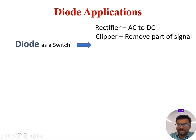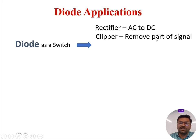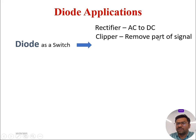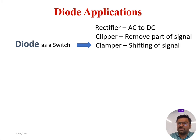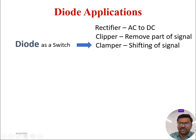Other than that, clipping action. Clippers are the circuitry which removes the unwanted part of a signal, or which removes the desired part of a signal that you would like to remove — it will clip off the signal which you would like to clip off. What are clampers? Clampers are the circuitry which will shift the complete signal either in a positive cycle or in a negative cycle.